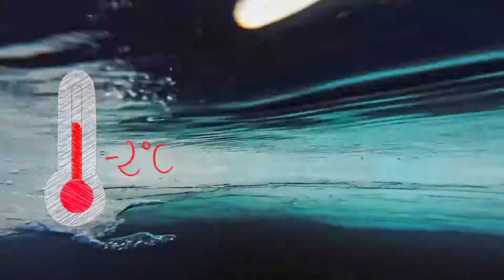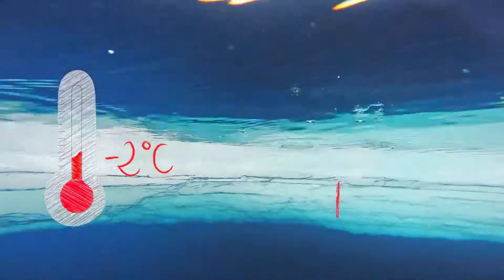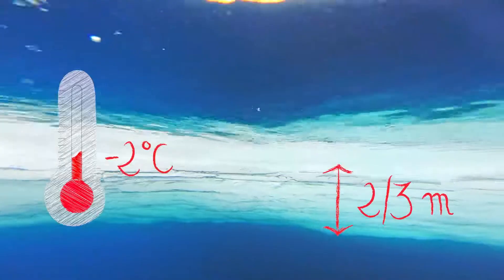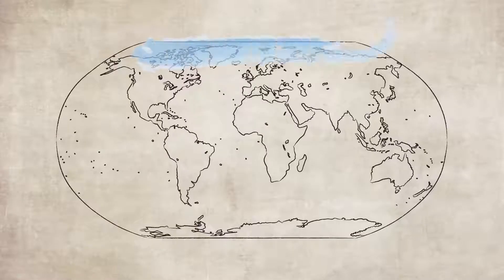Sea ice starts forming once sea water gets below its freezing point at minus two degrees Celsius. It grows in thickness up to two to three meters. We find sea ice in the Arctic Ocean and also around Antarctica.